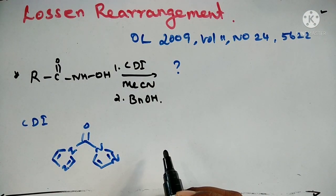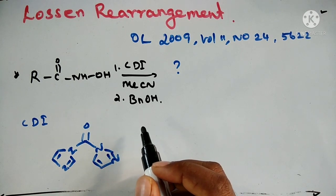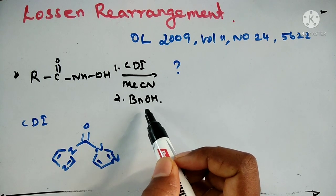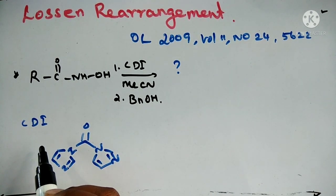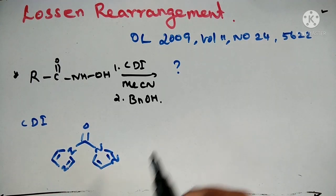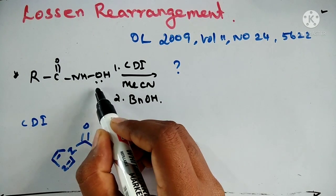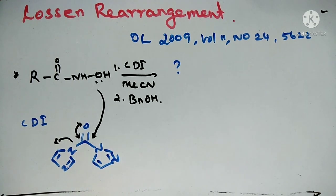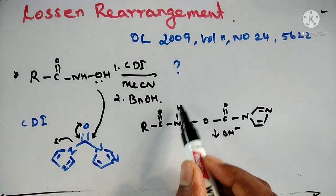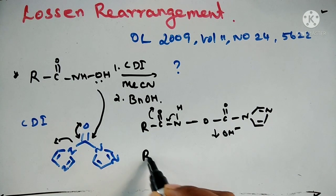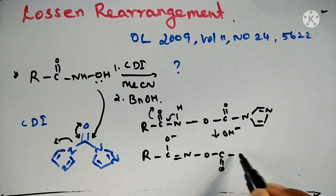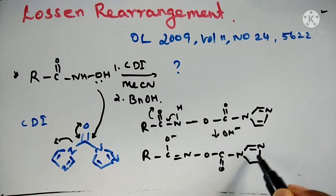Let's discuss this example, which I collected from the Organic Letters journal. Hydroxamic acid in the presence of CDI (carbonyl diimidazole) in acetonitrile, then benzyl alcohol — what is the product? What will happen when you react with carbonyl diimidazole: in the first step it will attack the carbonyl position, then one imidazole leaves. The next step: in the presence of base it will abstract the proton at the carbonyl position, giving R-C(=O)-N(-)-O-.